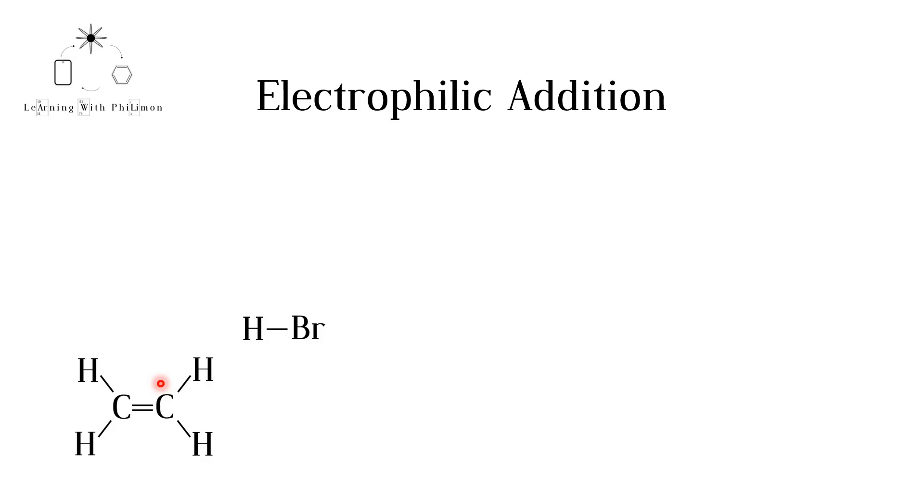In this video, we will be learning what the mechanism, the steps that occur in these types of reactions, is. Let's take the example of a reaction between ethene and hydrogen bromide, HBr.